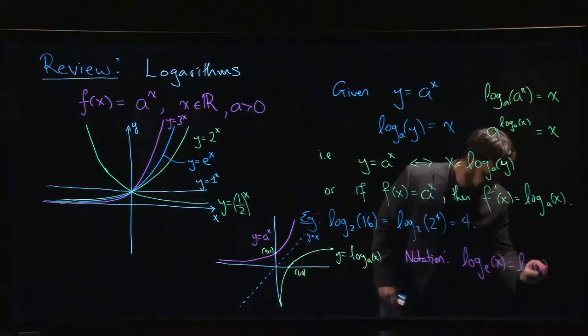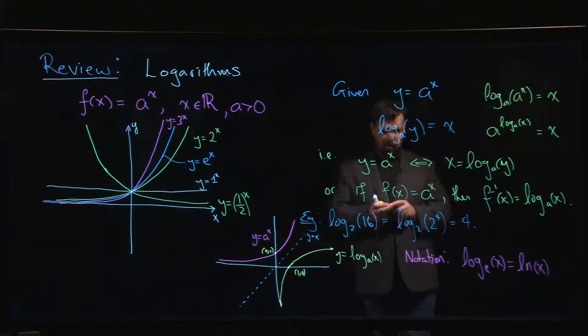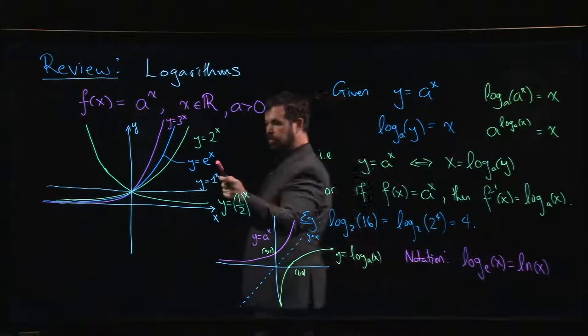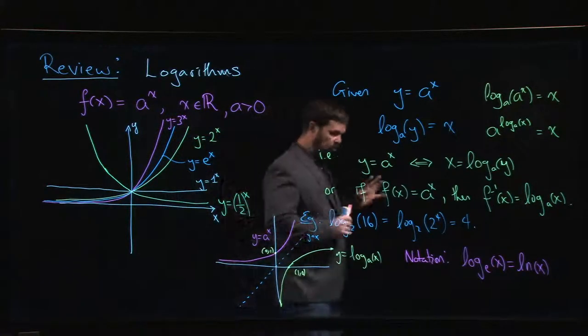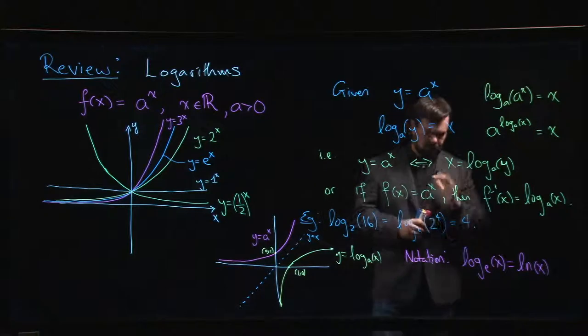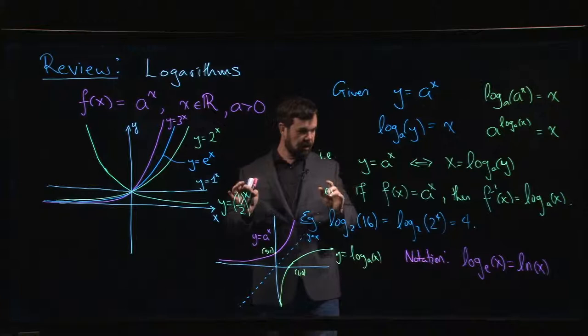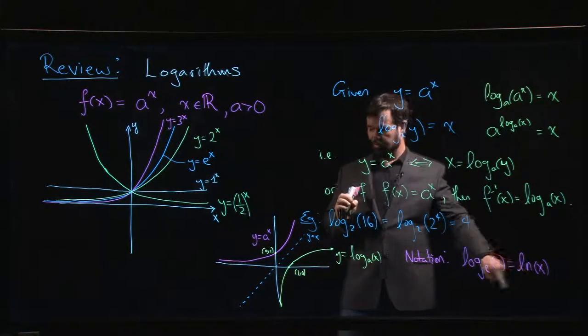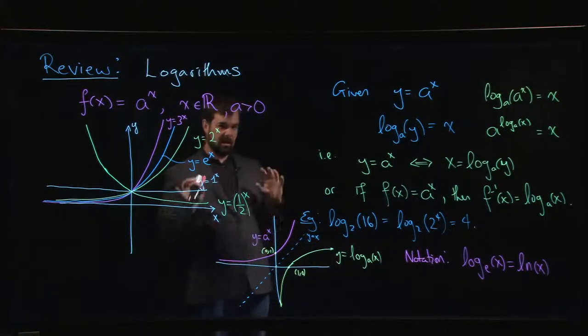In most calculus textbooks we write ln for natural log. ln of x is the natural log. So ln of x is the inverse of the natural exponential e to the x. One word of warning, one word of caution - there are some notational discrepancies. In most calculus books that are targeted towards science and engineering, this is the notation you're going to see almost universally for the natural log.